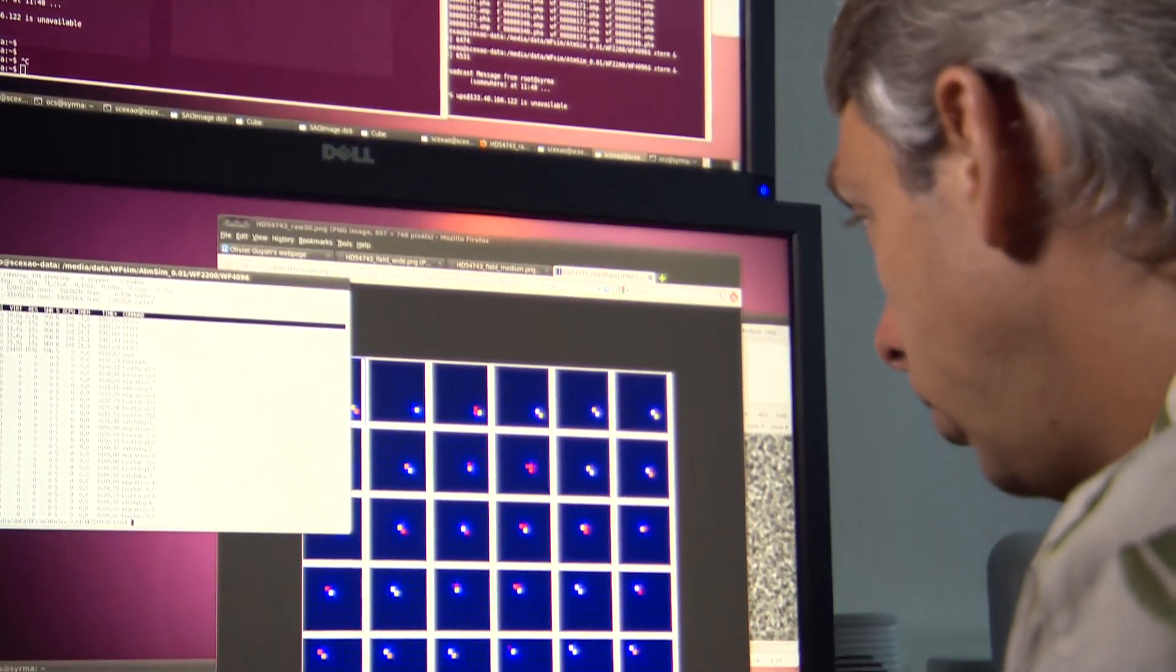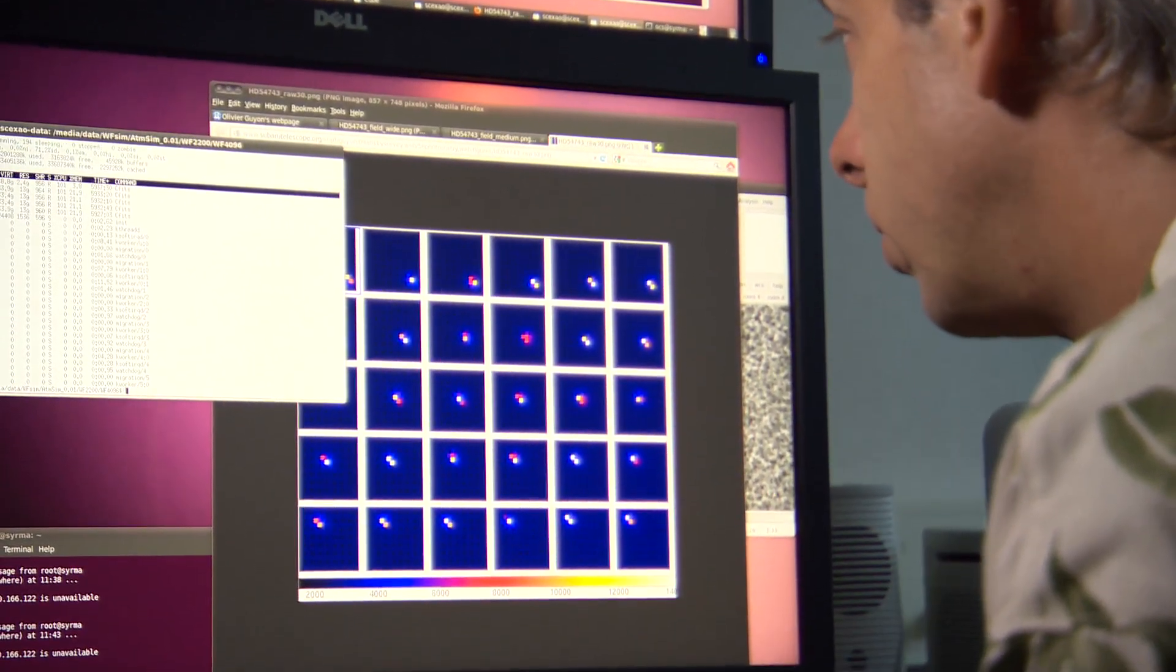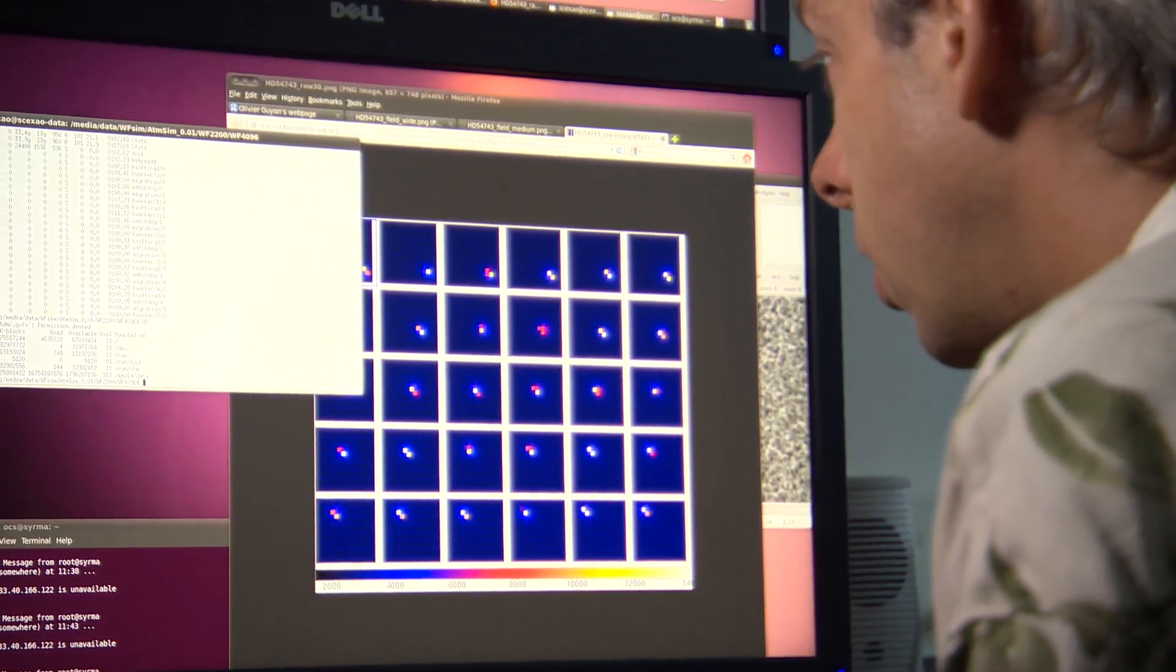They're extremely important, because if there is life somewhere else in the universe, it is probably on a planet that is similar to the Earth around another star. So we're looking for those exoplanets in the hope of finding life outside of our solar system.